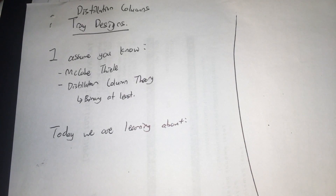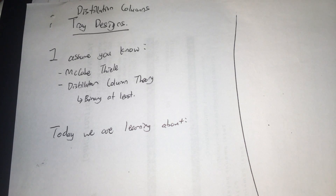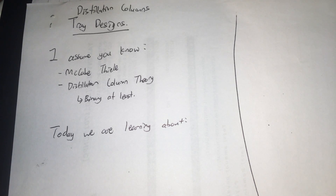Now I assume if you're watching this video, you should already know a little about the McCabe-Thiel method. If you're not sure, please go check out some videos on it. You should already know a little about distillation column theory, which means you should know how to, at least in theory, separate a binary mixture. Of course, if you know multi-component distillation, that's all the better.